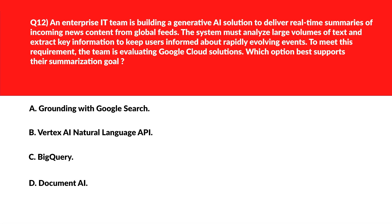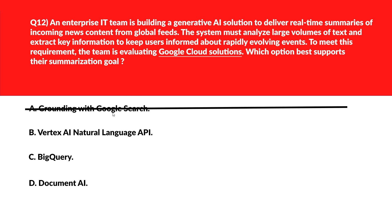Now let's look at this question. We'll look at option A first. A says grounding with Google search. Grounding with Google search is a feature to reduce AI hallucination by consulting search results, not a summarization engine — wrong answer. We'll move to B. B says Vortex AI natural language API. The Vortex AI natural language API includes specialized models for text summarization, which is the core technical requirement. Let's keep it.